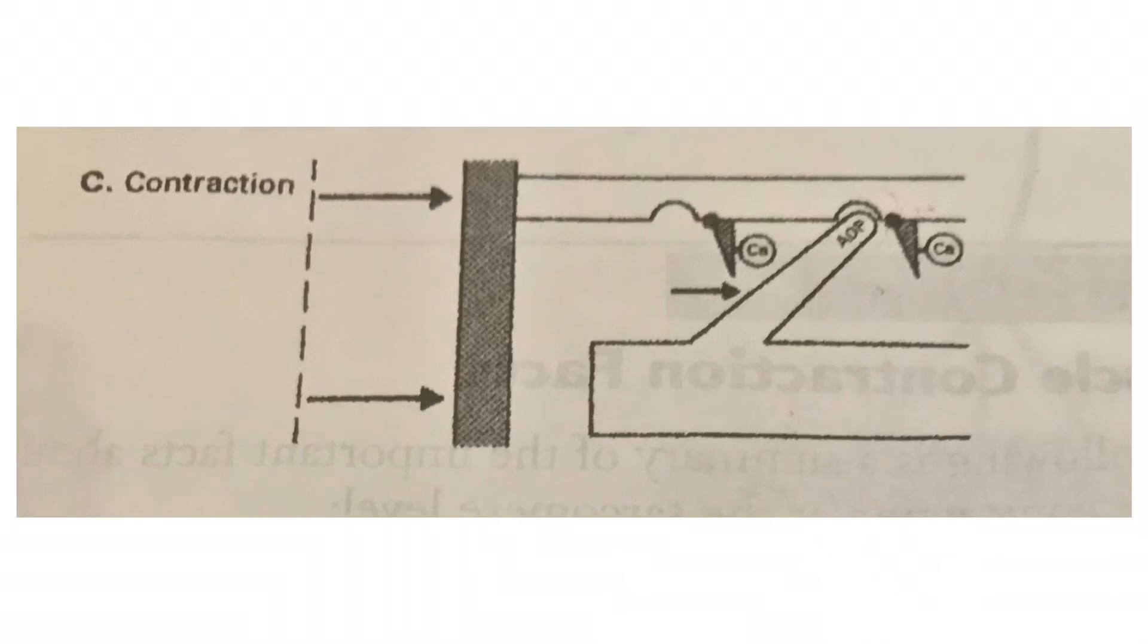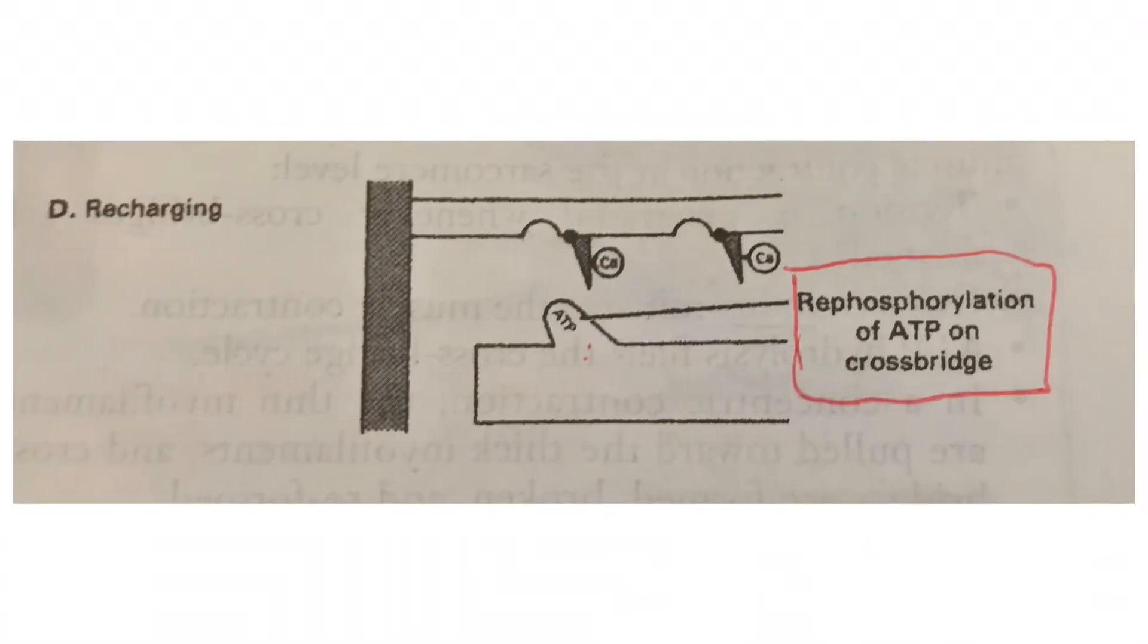Next stage is recharging. This is the point where actin and myosin are no longer linked together, thereby allowing rephosphorylation of ATP on the cross-bridge.